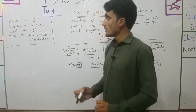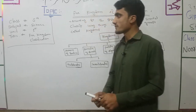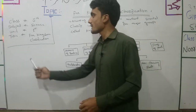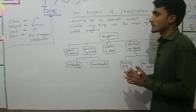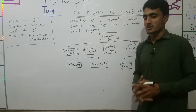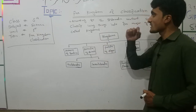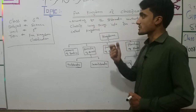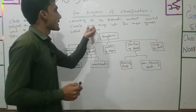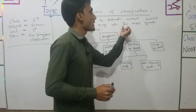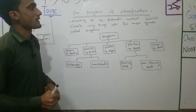Hello everyone, welcome to class 5, subject science, unit number 1. Today our topic is 5 Kingdom Classification. According to the systematic method, scientists classify living things into 5 major groups called kingdoms.